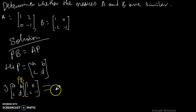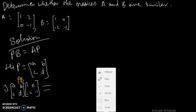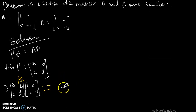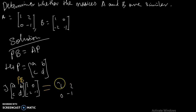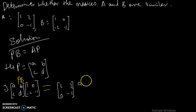This must equal matrix AP, where A is [1, 2; 0, -1] multiplied by matrix P which is [A, B; C, D].